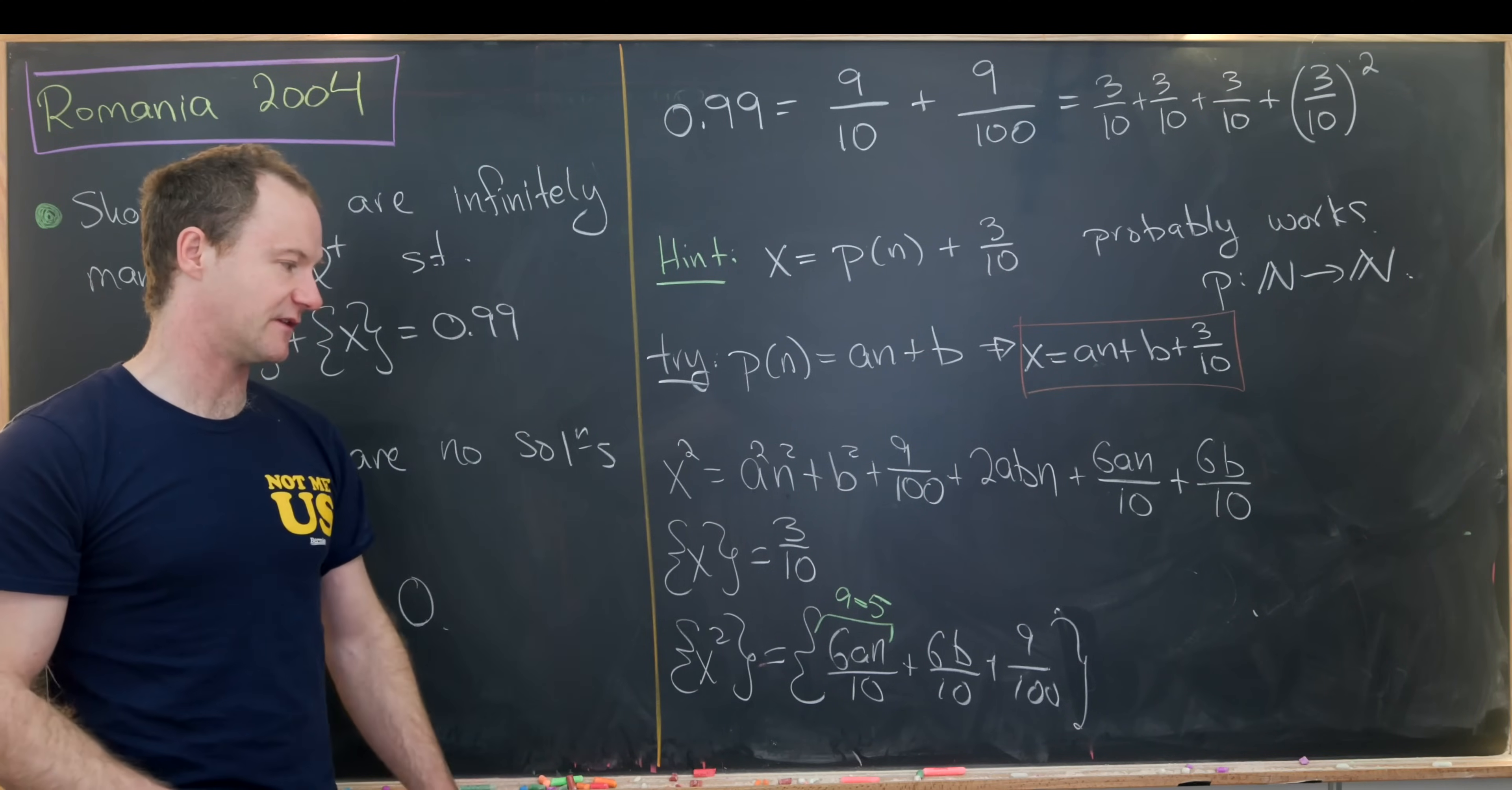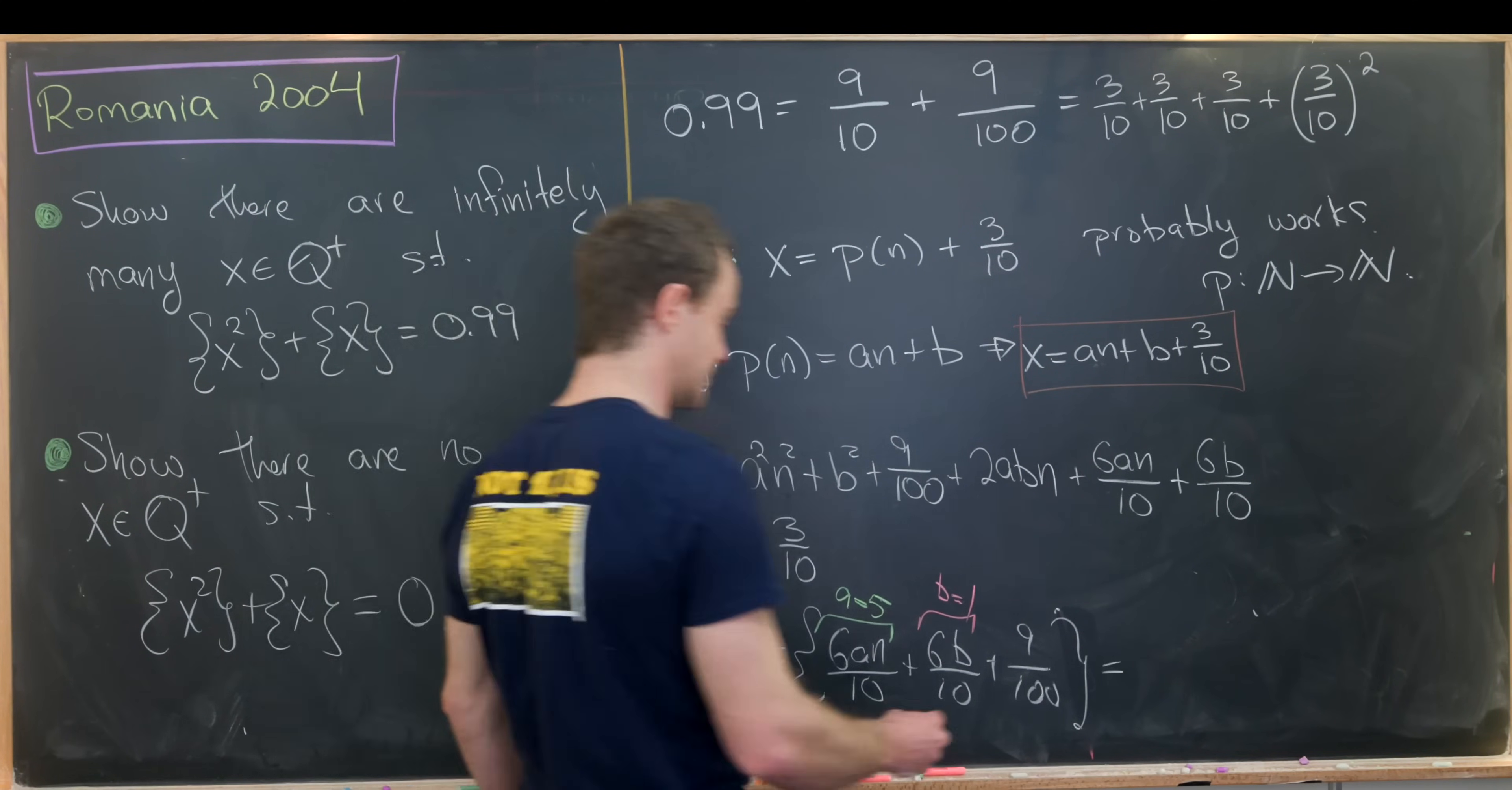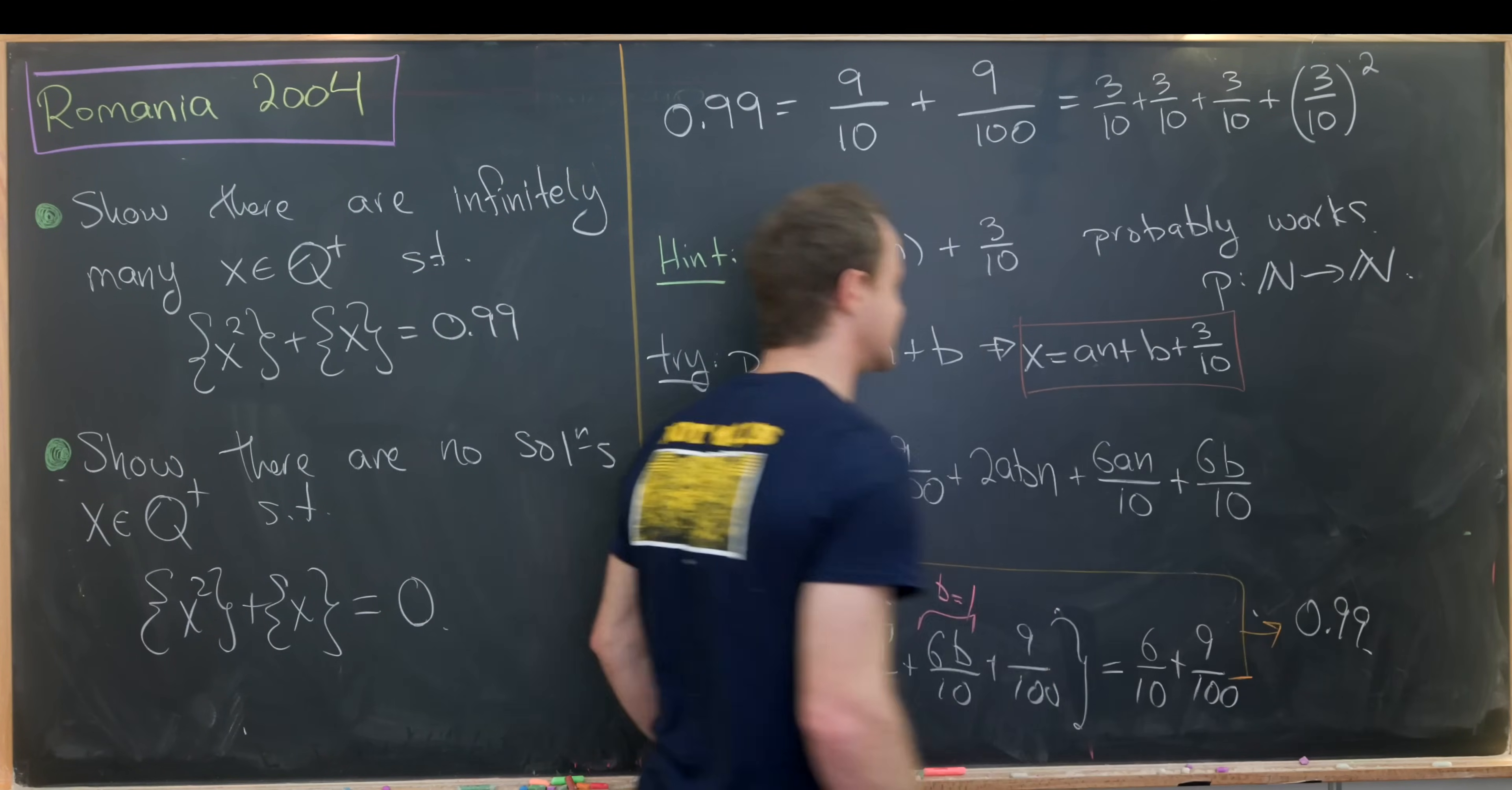Then we've got this 6b over 10. But if b is equal to 1, notice we have 6 over 10 plus 3 over 10. That's 9 over 10, and that's exactly what we need. So let's set b equal to 1. And that means this fractional part turns into 6 over 10 plus 9 over 100. But then pushing these two things together, which is exactly fractional part x plus fractional part x squared, will get our solution which is 0.99.